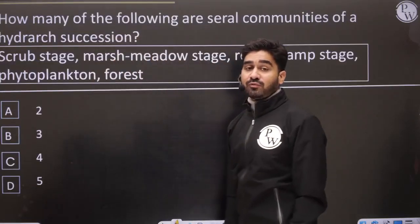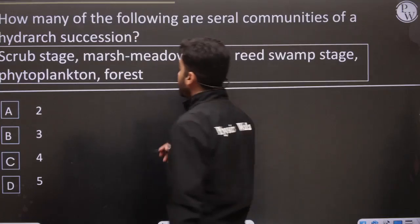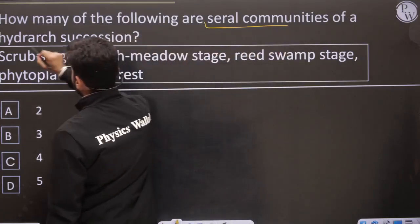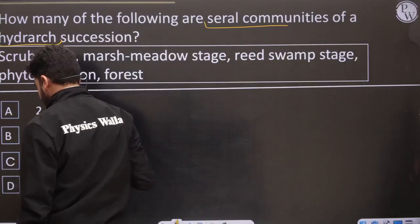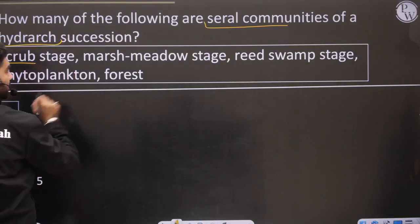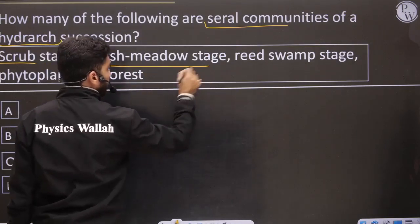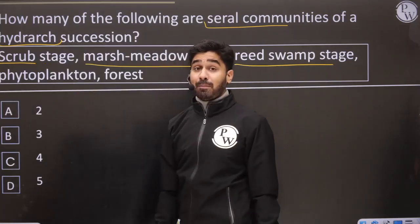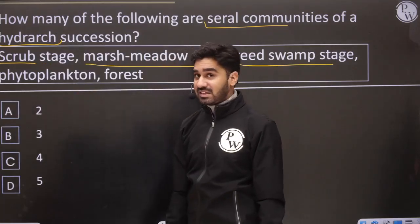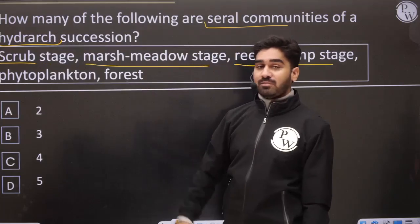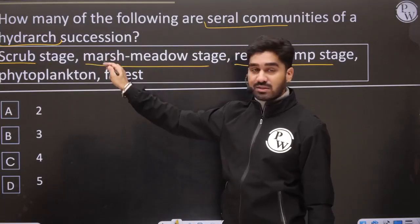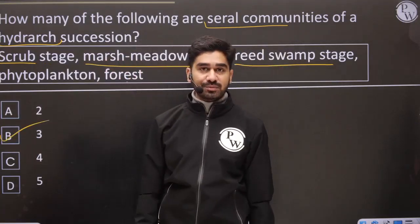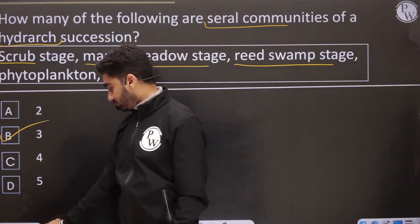How many of the following are seral communities in a hydrosere? Seral communities include: scrub stage, marsh meadow, and reed swamp. Phytoplankton is the pioneer — not a seral community. Forest is the climax. All the stages between pioneer and climax are seral. So the answer is option 3.